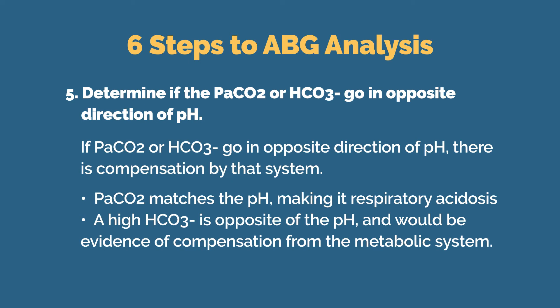If, however, that bicarbonate is out of normal range in the opposite direction of the pH — in this case a high bicarbonate level, which is alkaline in nature — then we have evidence of compensation from the metabolic system. Compensation can be partial or full. Partial compensation is noted when the opposite system is outside of its normal range in the opposite direction of the pH, but that pH is still outside of normal range — so the metabolic system has started to compensate, but only partially. Once the pH is brought back into normal range, then you have a situation of full compensation.